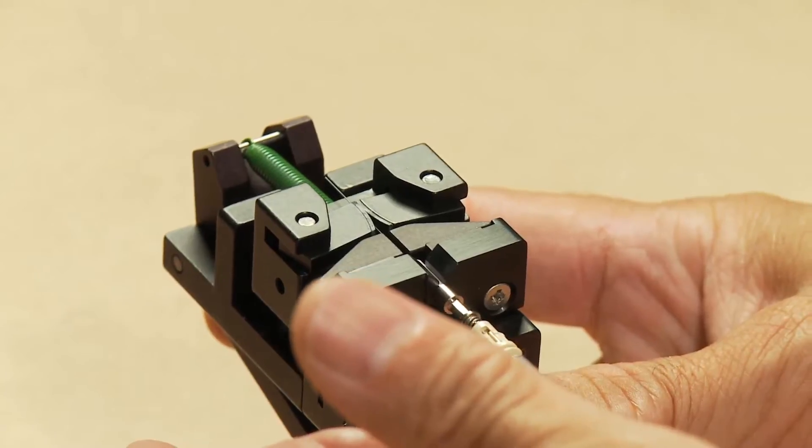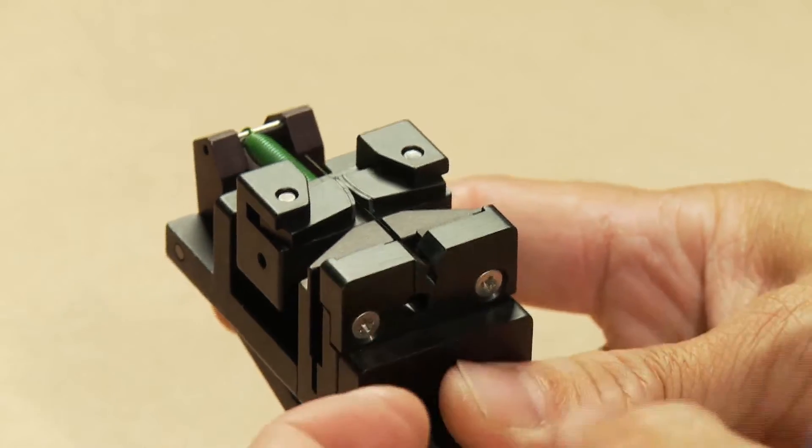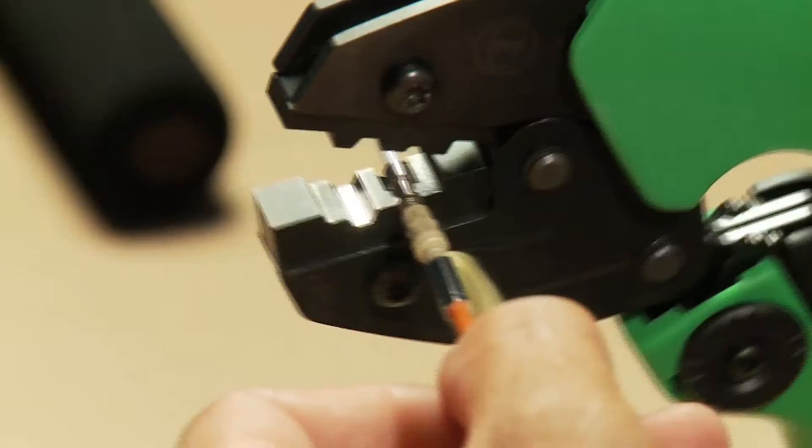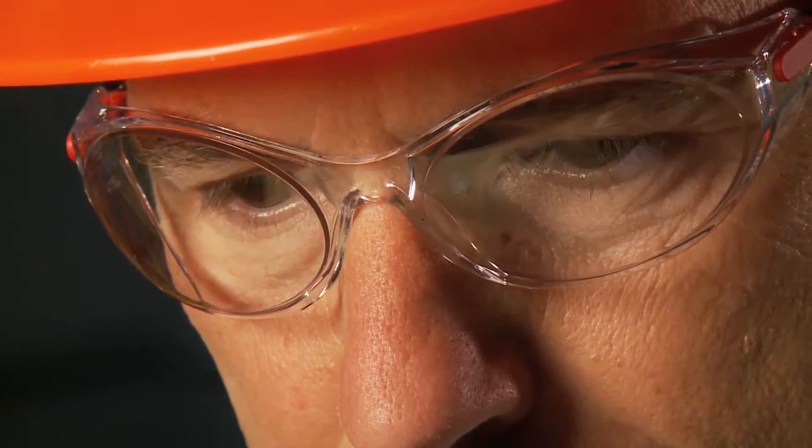Gently depress the trigger, let the cleave tool do the work. Just crimp, cleave, and leave.